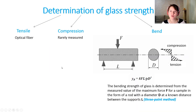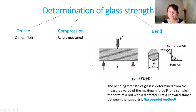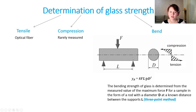Glass strength can be determined in tension, compression, or bending. The bending method is one of the most widely used — the so-called three-point bending method, where a glass block has a force applied in the middle. This creates compression stresses in the upper region and tension stresses in the lower region. Based on these stresses and the shape of the glass block, we can obtain the bending strength of the glass.